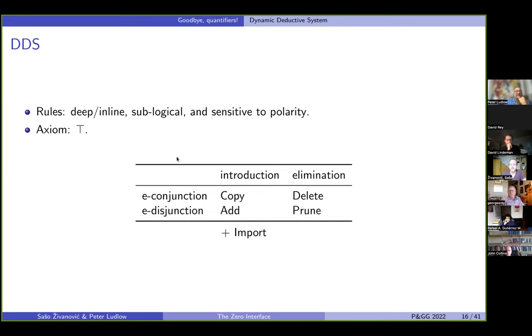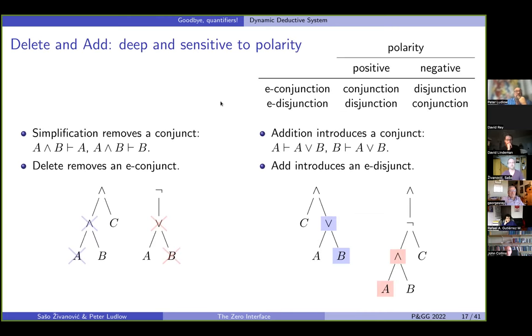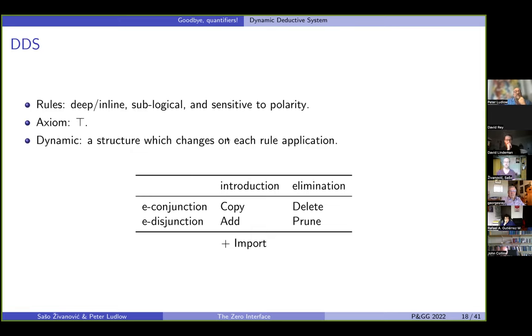So let me show you how these rules work. Let's first start with add and delete. So delete is really similar to classical simplification, which removes a conjunct. But here we only remove a conjunct if we are under positive polarity. If we are under negative polarity, we actually remove a disjunct. Now add is going to be just the reverse in some way, a dual. So addition, classical addition introduces a conjunct. But here we will introduce a disjunct. And our add introduces a disjunct in positive polarity environments, but then flips to introducing a conjunct in negative polarity environments. So this way, you see how our rules are sensitive to polarity.